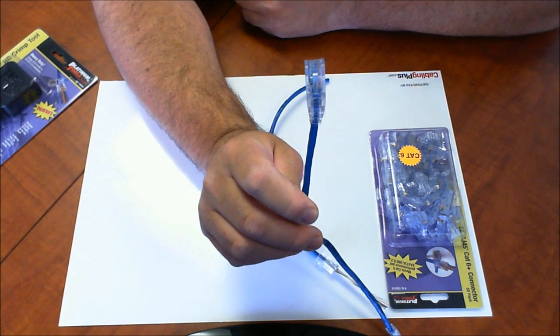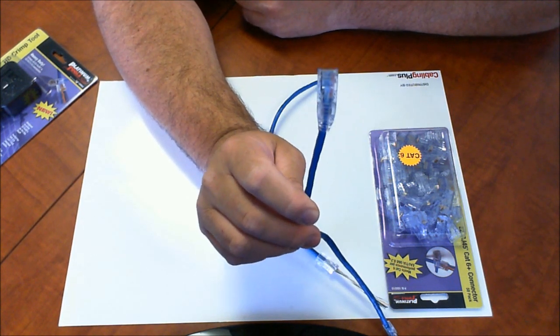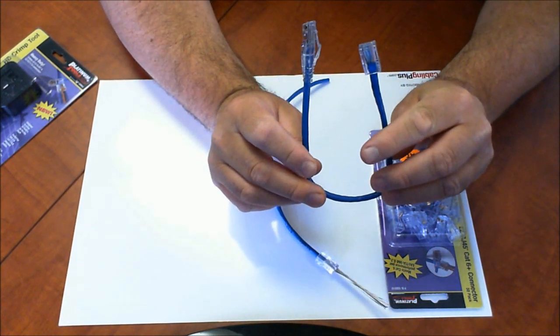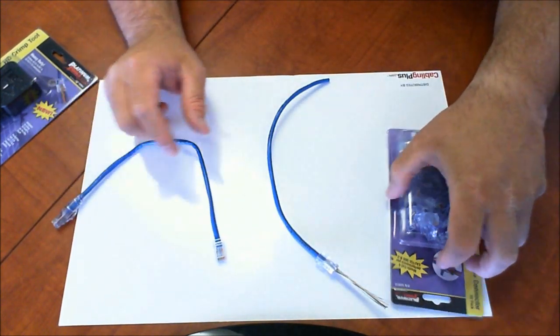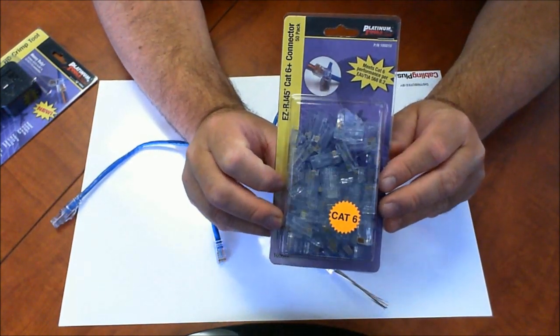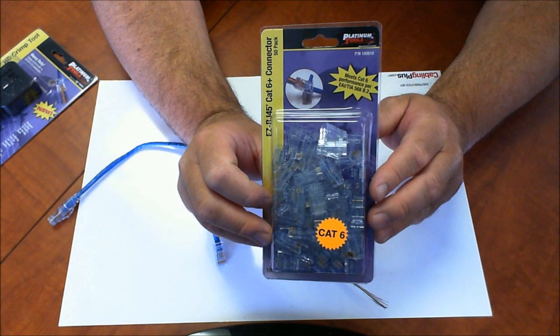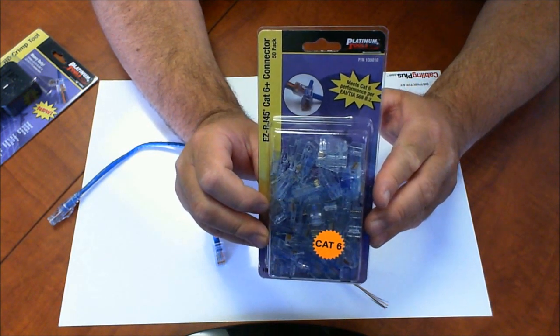I hope this video has been helpful. This is the Platinum Tools EZ-RJ45 Cat 6 connectors, part number 100010. Best of luck in all your installations, take care.